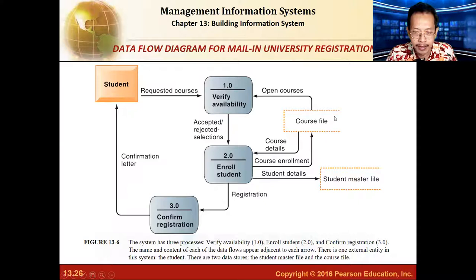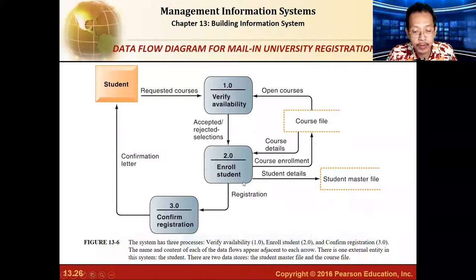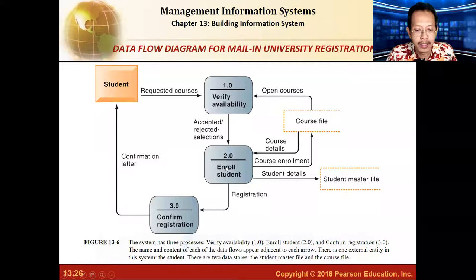The data is sent to the system to indicate the course will be opened because a student is applying. From the course file, data is given on course details, while student details — name, address, and so on — are sent to the student master file for a new student. It goes to the student database from process 2.0, then registration, and 3.0 confirms the registration, sending a confirmation letter to the student.